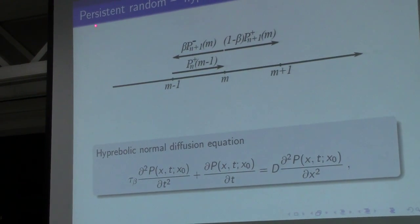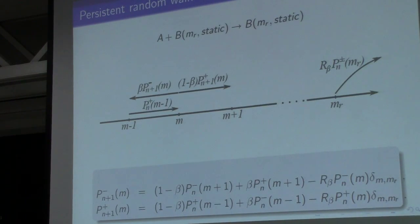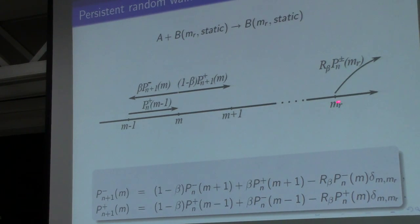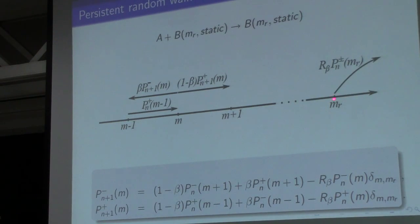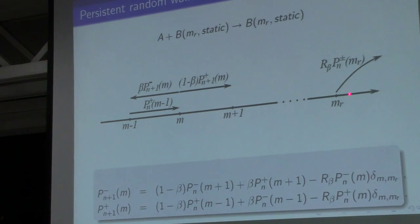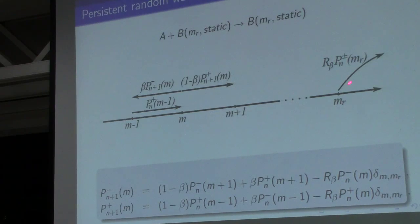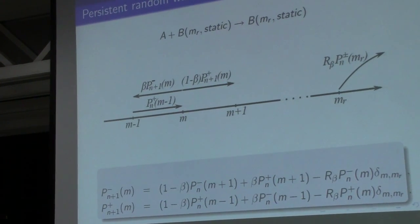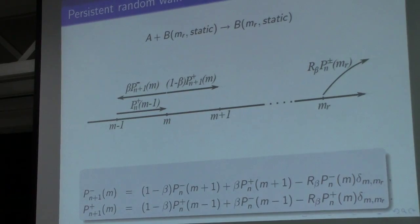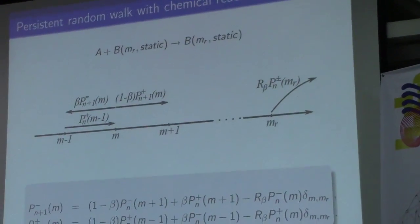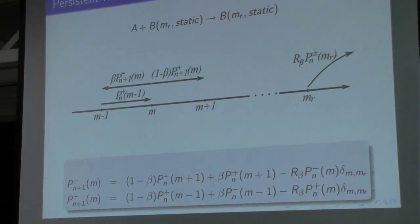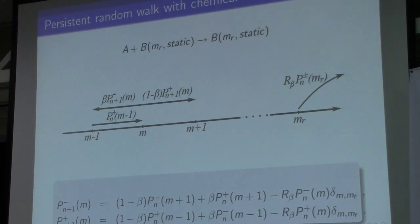We consider the case in which particle B is located at one fixed position R, and B is static, so the reaction can only occur at that point. The persistent random walk is defined as a random walk in which successive steps are correlated.